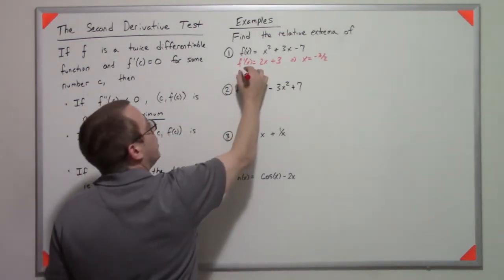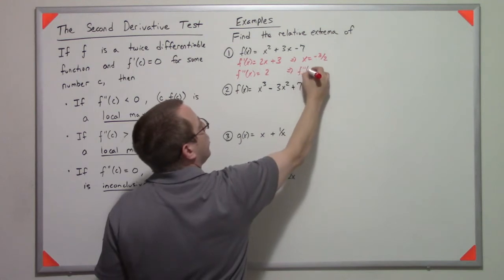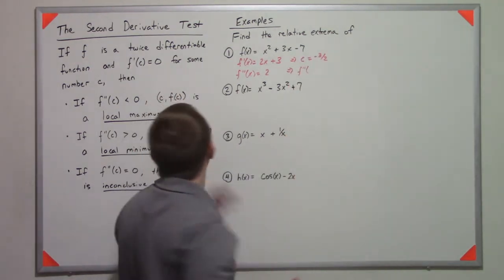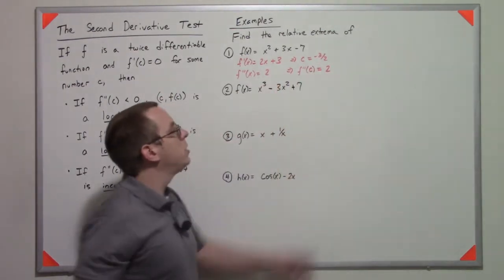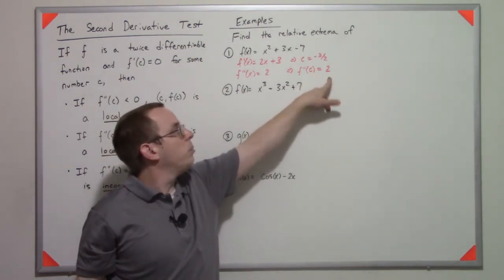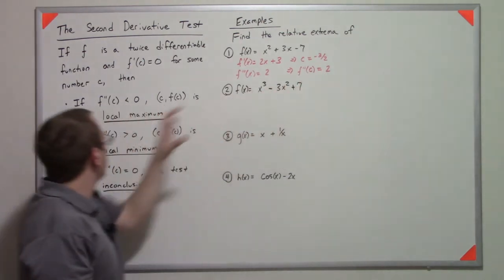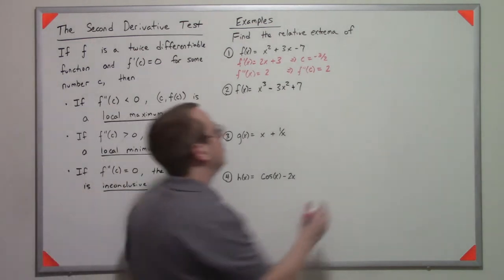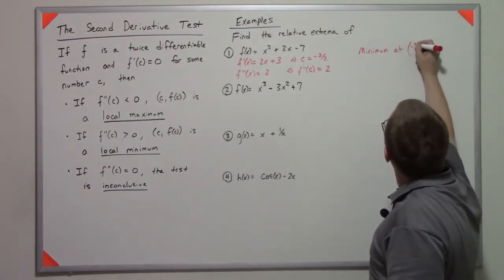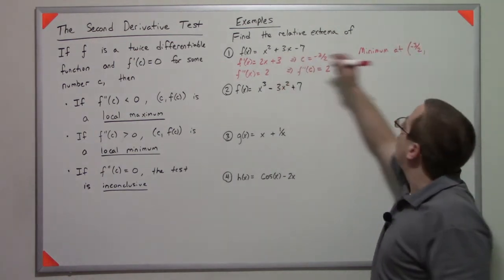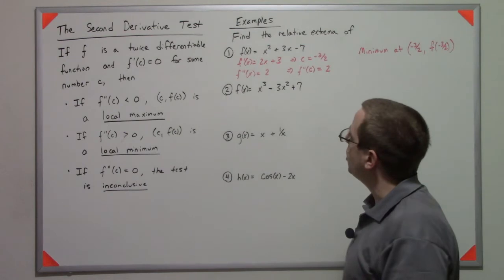Then what I do is I find the second derivative which is 2, and I find the second derivative, let's call that c here because that'll match up with this piece. But since this is a constant function, you know that whatever I plug into here doesn't even matter, it's always concave up. So since it's greater than zero, we have a local minimum at negative three-halves.